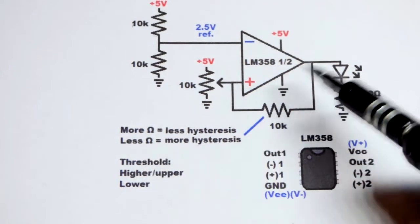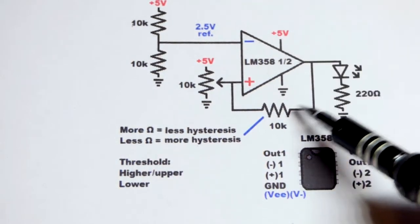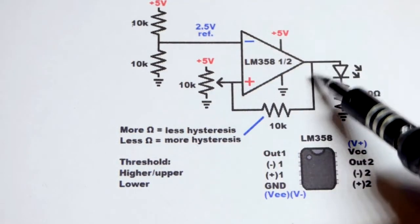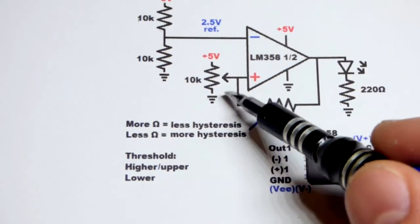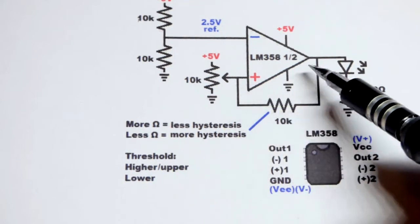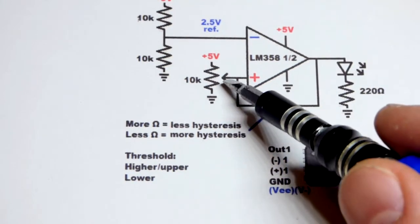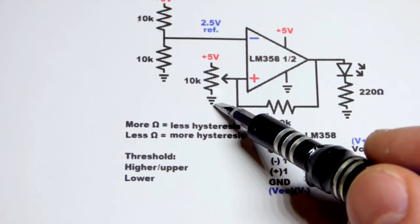Whereas if you have less resistance, then you have a better connection basically to 5 volts through that resistor. And thus you'd have more hysteresis. You'd have to get more negative to overcome it.